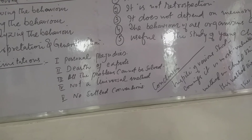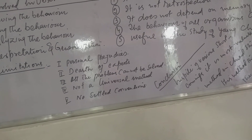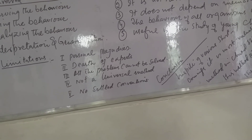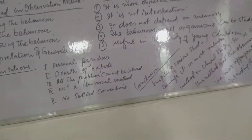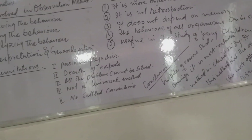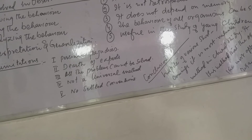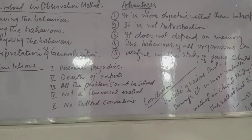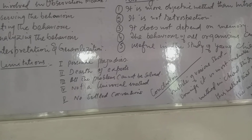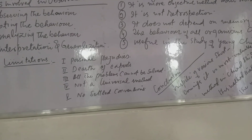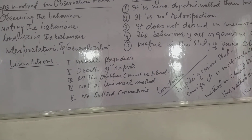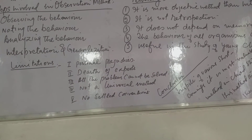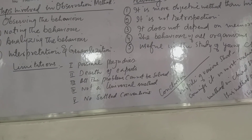Number three: all the problems cannot be solved. The observation method fails to solve all problems. It is impossible to interpret dreams through this method; therefore, it cannot be called a universal method. Number four: it is not a universal method. Full reliance cannot be placed on the data collected through this method; sometimes its objectivity is marred due to introduction of the element of bias. Number five: no settled conventions. Children are more prone to change; they do not have settled conventions and shift from one aspect to another, making it difficult to observe their behavior.